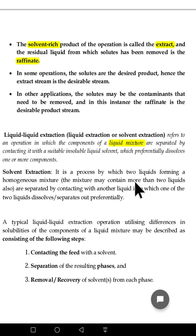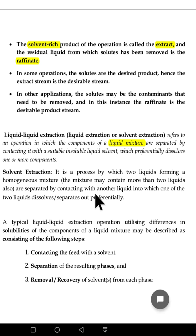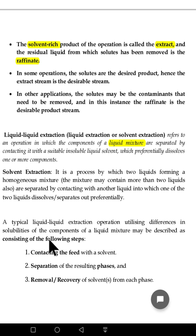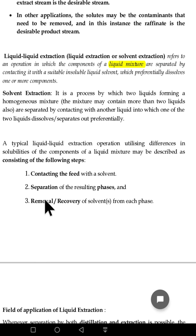Solvent extraction is a process by which two liquids that form a homogenous mixture are separated by contacting with another liquid — a third solvent — into which one of the two liquids dissolves preferentially.